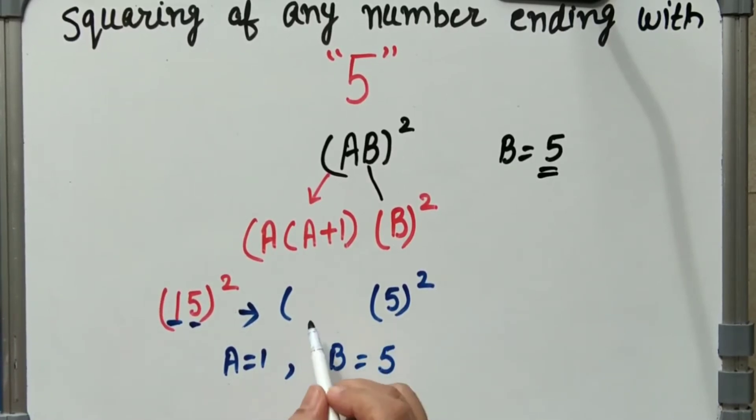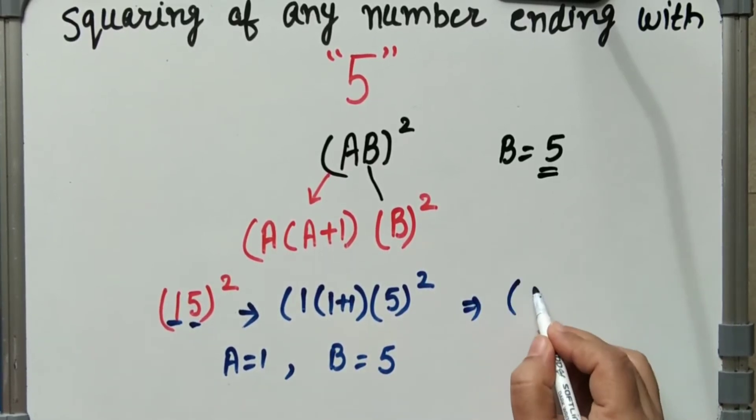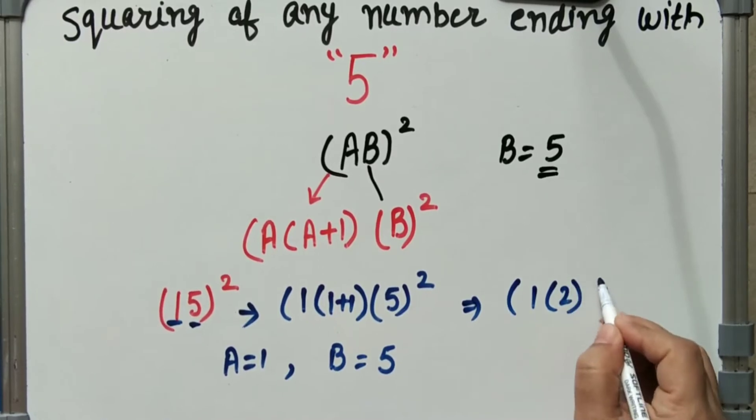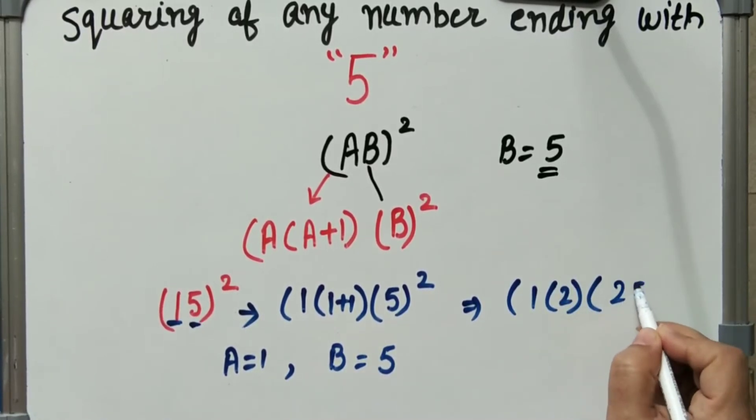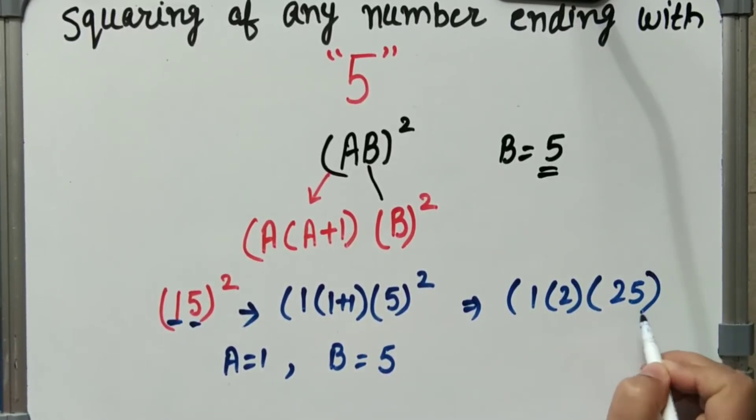Means we will take A, 1 as it is, and next we will add 1, means 1 plus 1. Then let us see, 1 and 2, and here is 5 square means 25, and we will multiply these two terms.